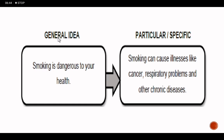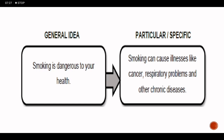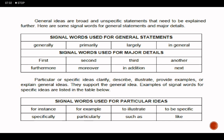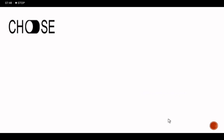Let's have an example. General idea: 'Smoking is dangerous to your health.' Particular or specific idea: 'Smoking can cause illnesses like cancer, respiratory problems, and other chronic diseases.' We can use a transition word for our general idea — for example, 'Generally, smoking is dangerous to your health.' For the particular or specific idea, we can use 'Particularly, smoking can cause illnesses like cancer, respiratory problems, and other chronic diseases,' or we can also use 'for instance' or 'for example.' That is how we use the general-to-particular pattern.